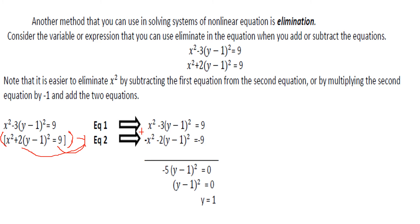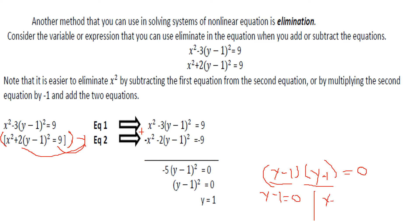Now solve for y. Since negative 5 times the quantity y minus 1 squared equals 0, this can be written as negative 5 times the quantity y minus 1, times the quantity y minus 1 equals 0. We equate each factor to 0, so y minus 1 equals 0, giving y equals 1.